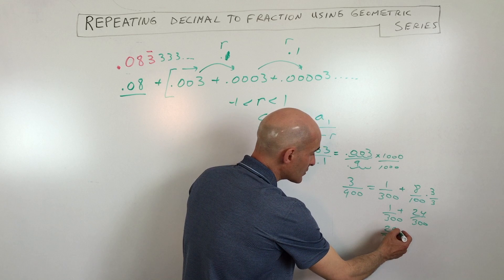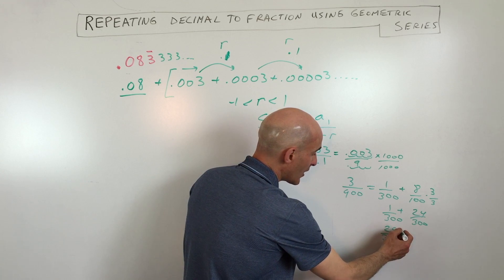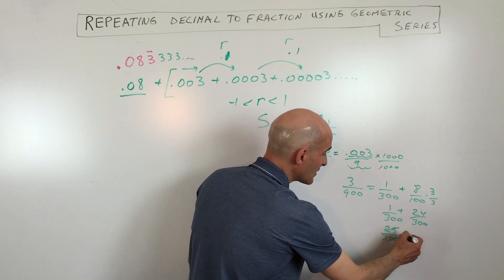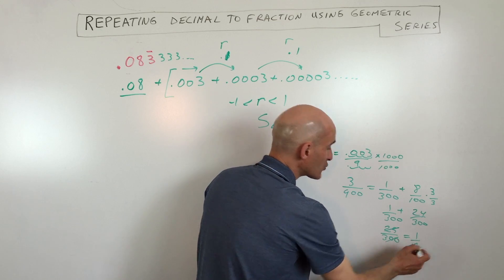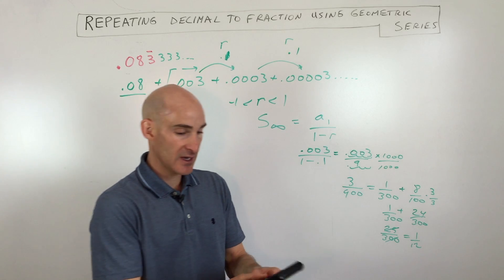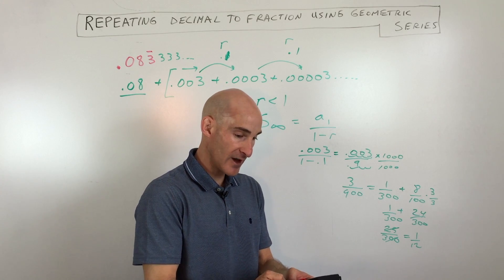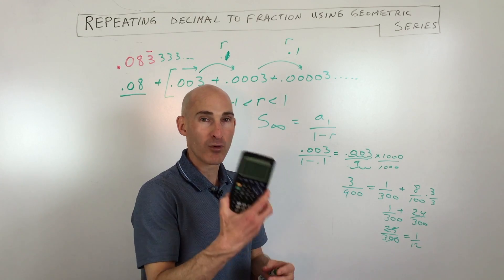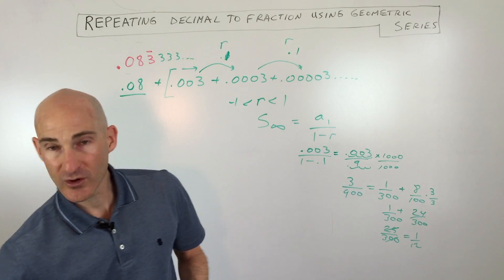Now we can reduce it down even further. We know that 25 goes into 300 how many times? 12 times. So this is going to be 1 over 12. Now what I recommend doing is just checking. Just go to your calculator and just see. So 1 divided by 12 is 0.0833333 repeating.